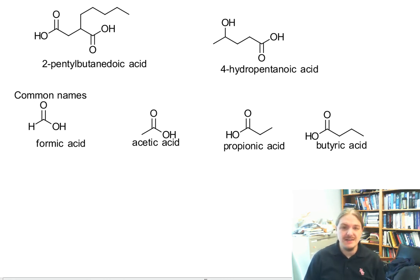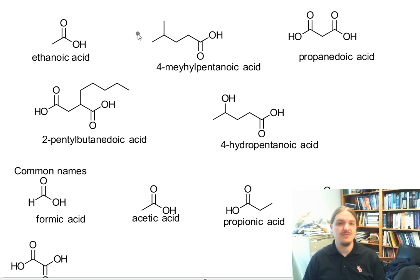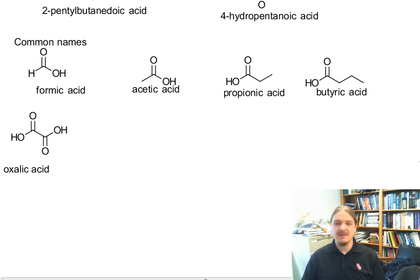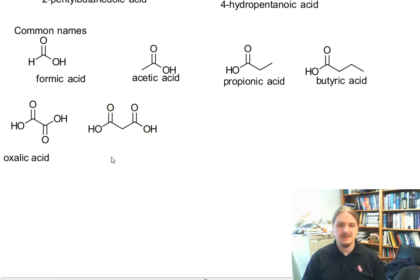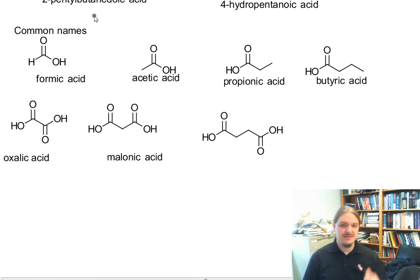And then there's some dioic acids that have common names that have survived as well. Like this one is oxalic acid. And the 3-carbon acid, which actually I drew up here, is called propanedioic acid. Its common name is malonic acid. And the butanedioic acid, this is succinic acid.